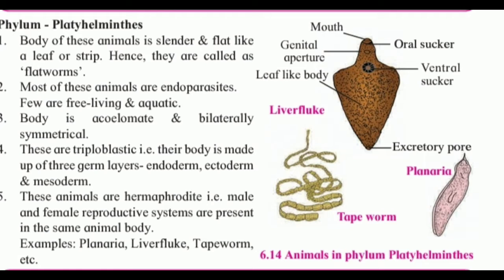The body is acoelomate and bilaterally symmetrical. These are triploblastic, meaning their body is made up of three germ layers: endoderm, ectoderm, and mesoderm. These animals are hermaphrodite, meaning the male and female reproductive systems are both present in the same animal body. Examples include Planaria, liver fluke, and tapeworm.